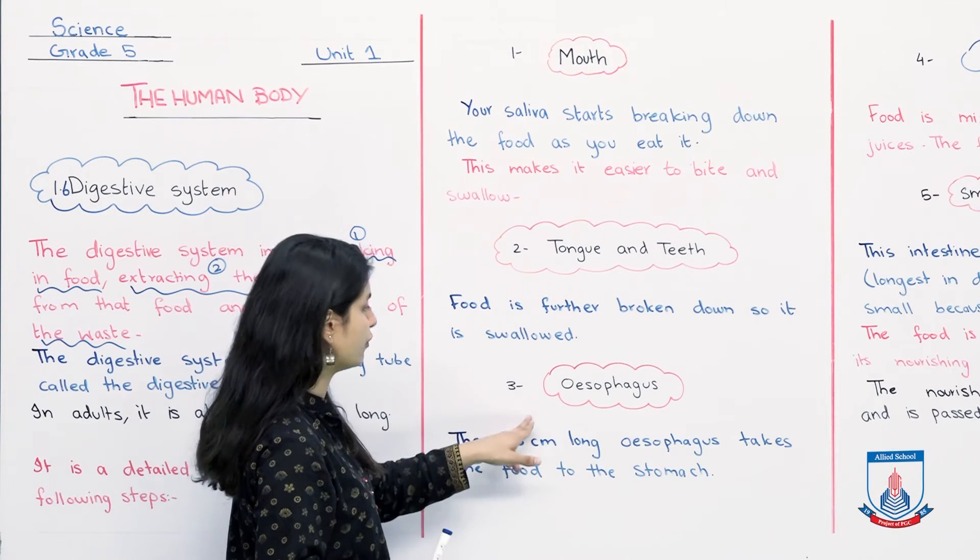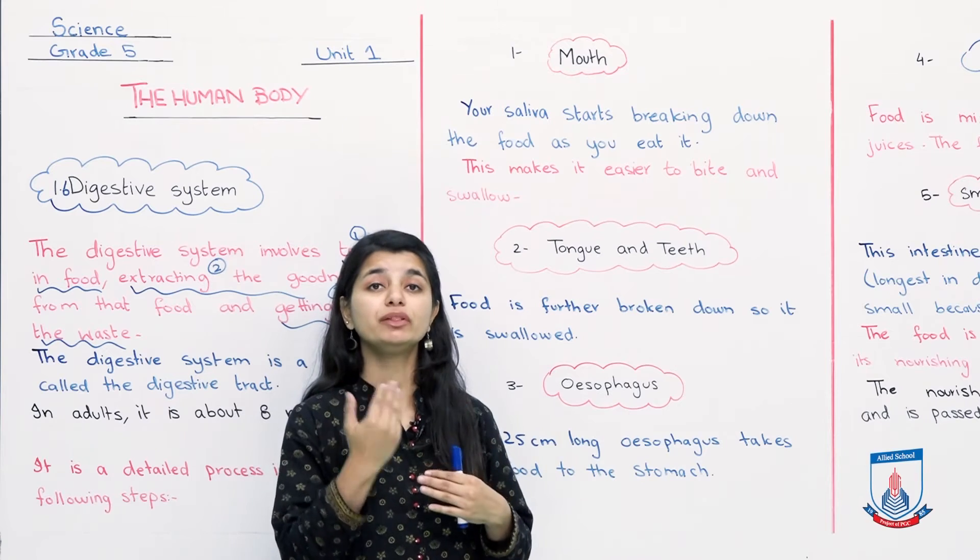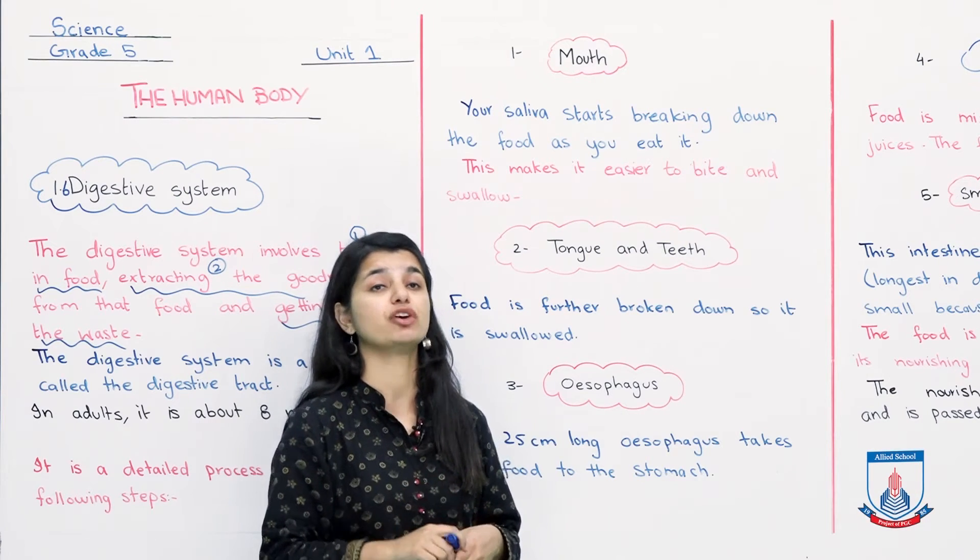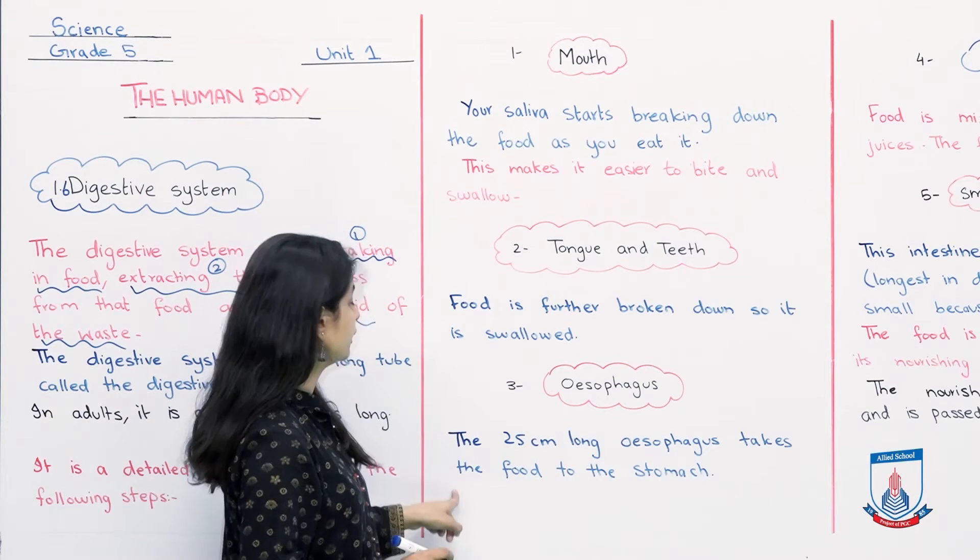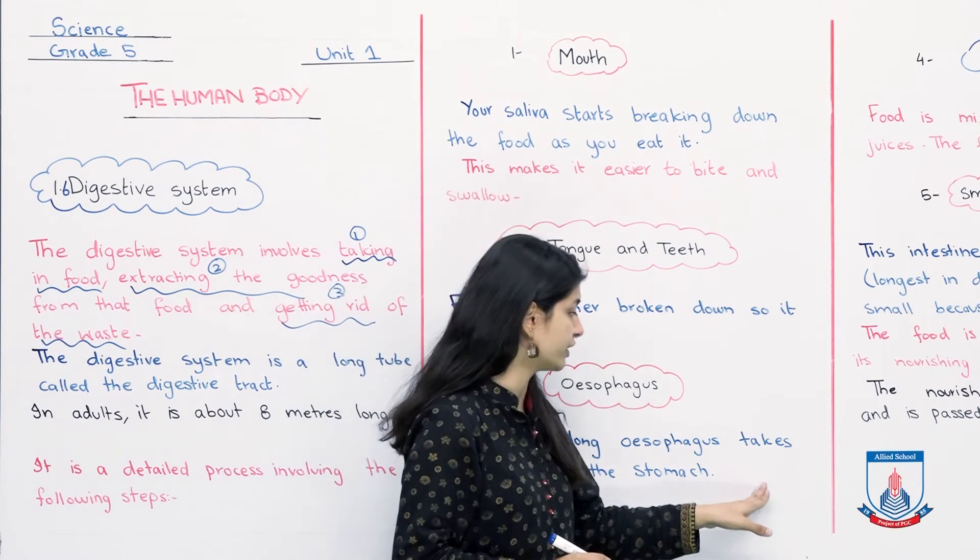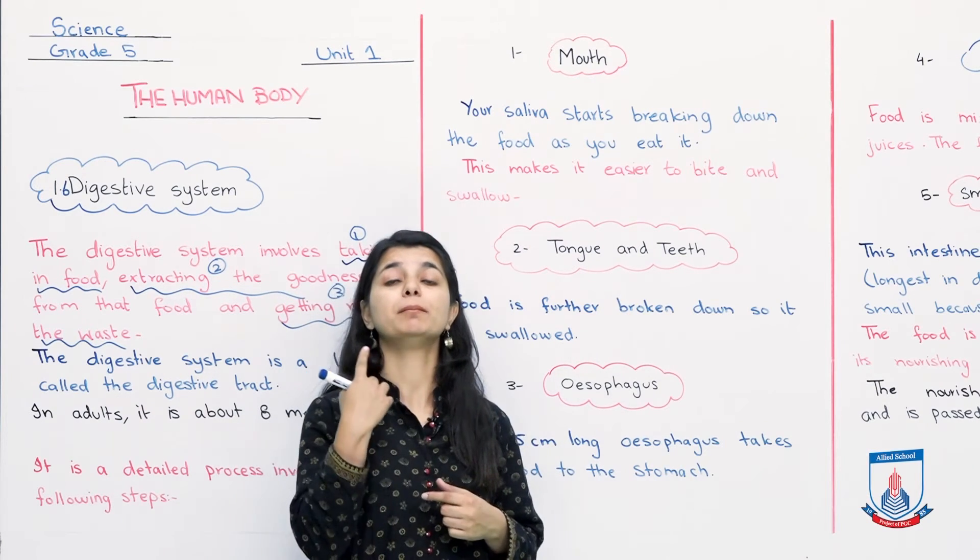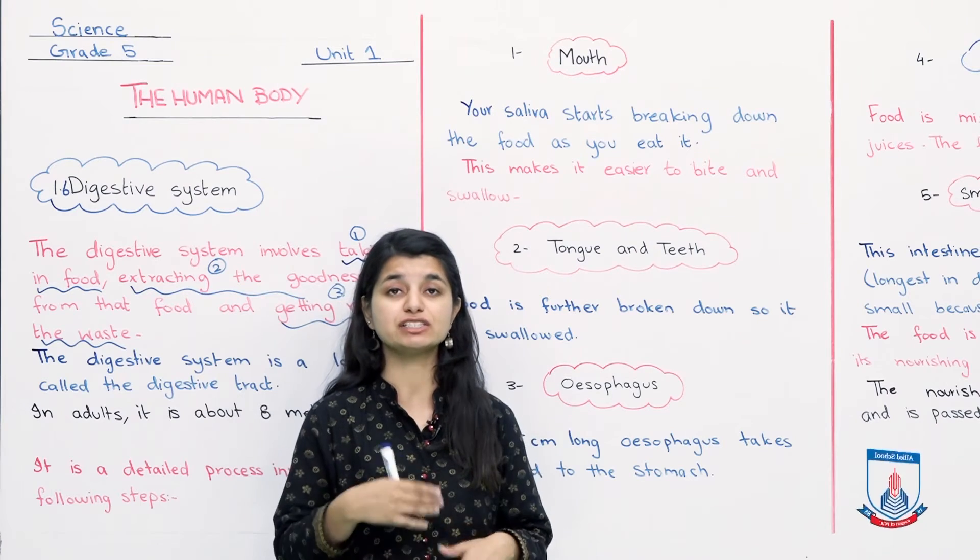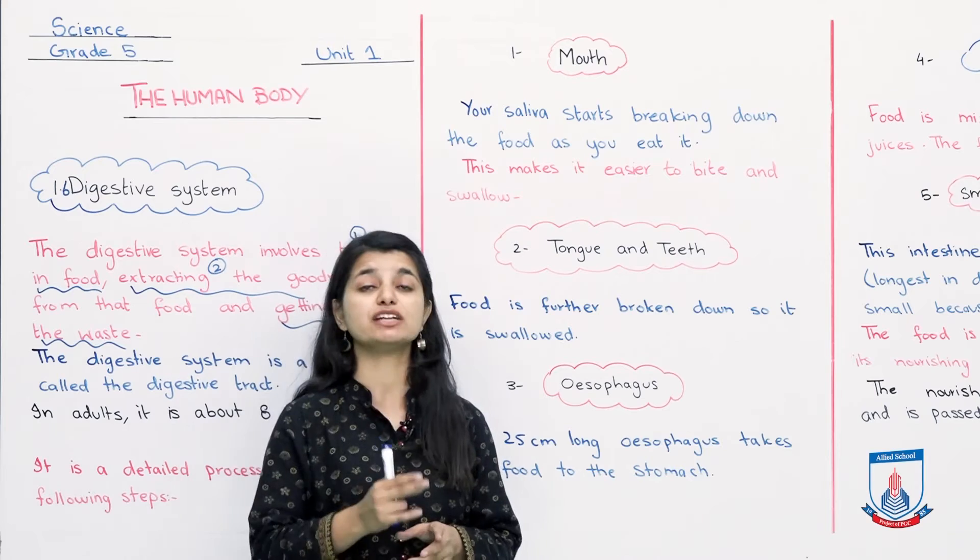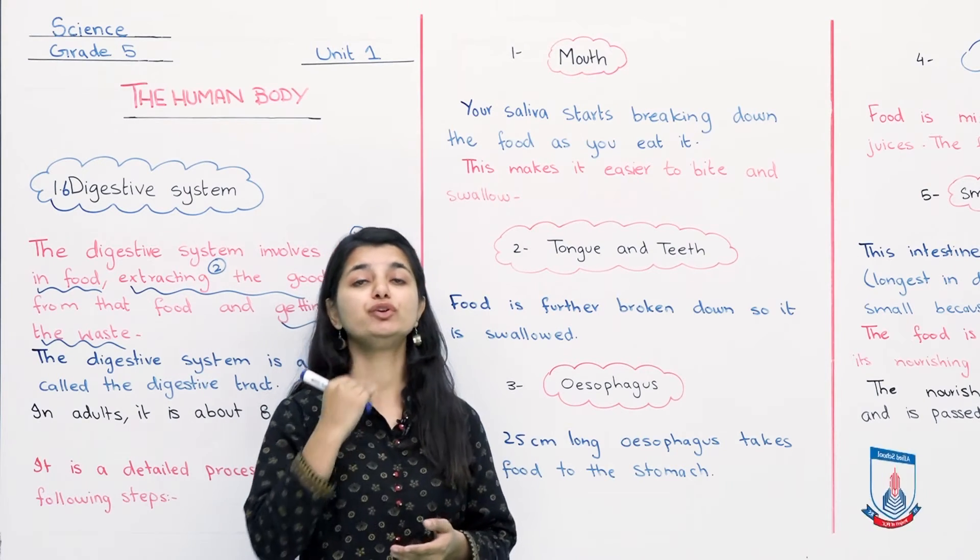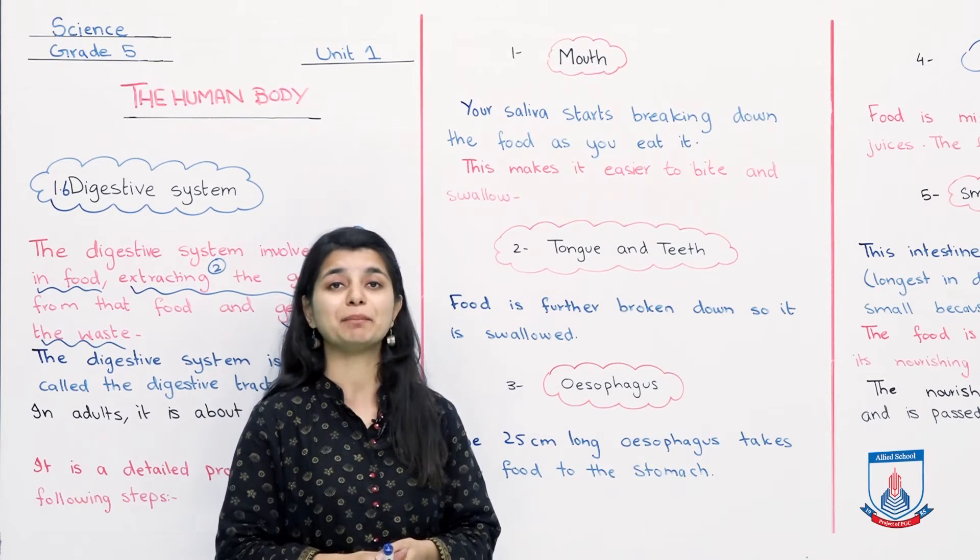Next, we have the esophagus. Once your food has entered your mouth, there is a pipe that we call the esophagus. The 25-centimeter long esophagus takes the food to the stomach. This is the pipe that carries food from your mouth to your stomach, where the rest of the digestive process starts. The esophagus doesn't digest food, it just moves food from your mouth to your stomach.